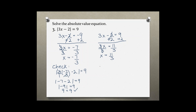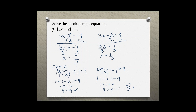Doing the same for the right solution, we plug 11 over 3 in for x in the original equation. Cross-simplifying, the 3s cancel, leaving 11 minus 2, which equals 9. The absolute value of 9 is positive 9, which equals 9 — also a true statement. So our solution to this problem is x equals negative 7 over 3 and x equals 11 over 3.